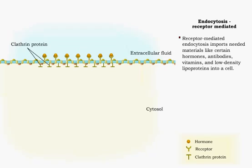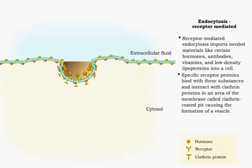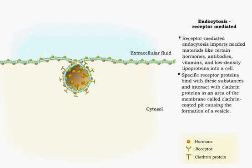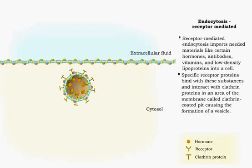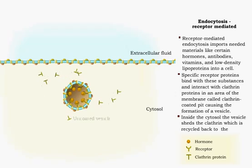This area of a membrane is called a clathrin-coated pit. When the coated pit and receptor interact, the membrane folds inward to form a vesicle surrounding the substance and receptors. Once inside the cytosol, the vesicle loses its clathrin, which is recycled back to the membrane.